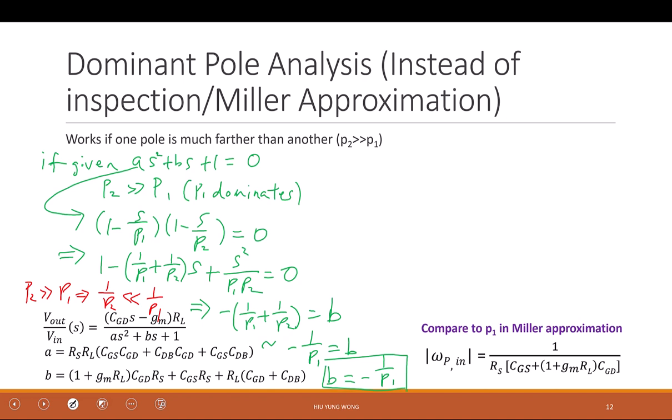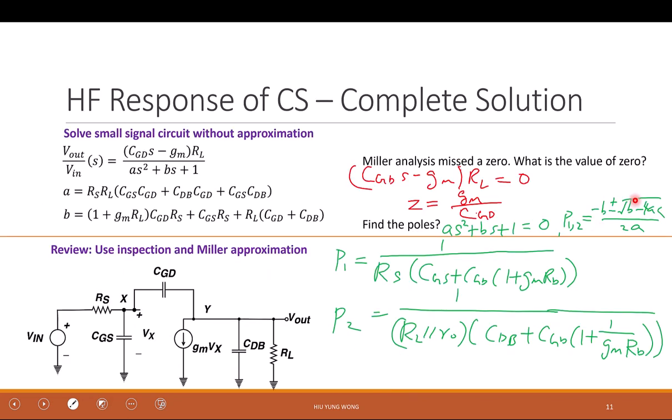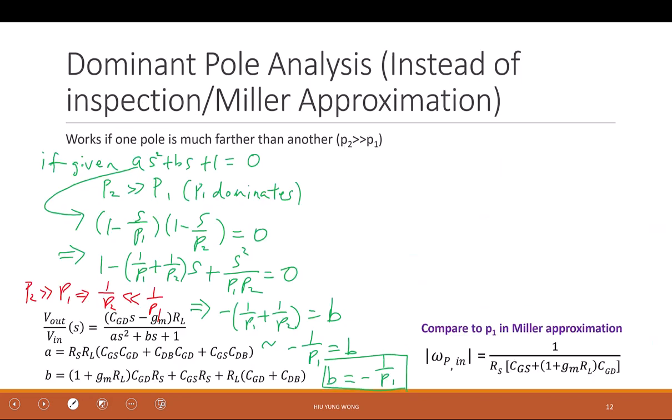Am I right? So you give me this equation, so bulky. But I'm not going to solve this. I assume that the P2 is much larger than P1. Then I already know that the B is just equal to 1 over this guy. This is P1.